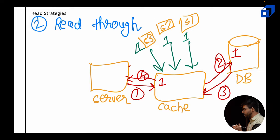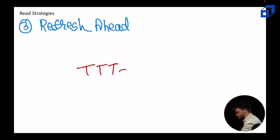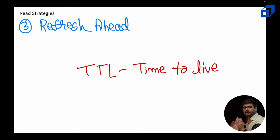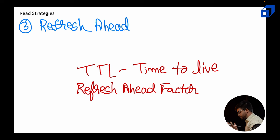Lastly, refresh-ahead. An important thing to note: whatever information is present in the cache has some sort of TTL — Time To Live — associated with it. There is an expiration period for each item in the cache. If there is some hot data fetched on a constant basis, we don't want it to expire. With refresh-ahead, there is a refresh-ahead factor — let me explain what this factor means and how it influences this read strategy.